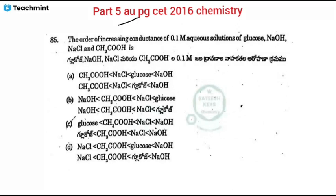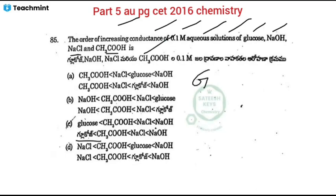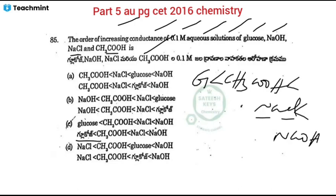Next: the order of increasing conductance of 0.1 molar aqueous solutions of glucose, NaOH, acetic acid, and NaCl. Glucose is a non-electrolyte, so it has no ions. Acetic acid is a weak acid with fewer ions. NaCl and NaOH are strong electrolytes. NaOH has higher conductance than NaCl. Option C is the correct answer.